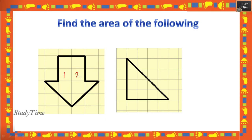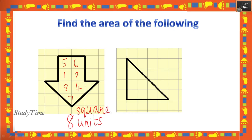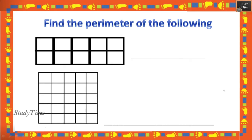Find the area of the following shapes by counting squares: for the first shape, counting gives 6 + partial squares together making 8 square units total. For the second shape, similarly counting gives 8 square units. Always write the answer in square units when no specific measurement unit is given.